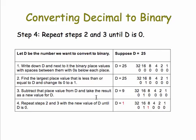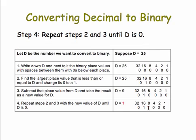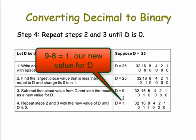Step four: we're going to repeat steps two and three until we get a value of zero for D. So in this case, the largest value that's less than or equal to D, which is now 9, is 8. So I'm going to put a one under the eight, and then subtract the eight from the nine, giving a new value of D of one.